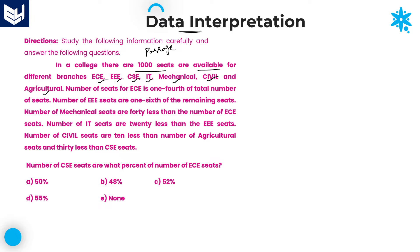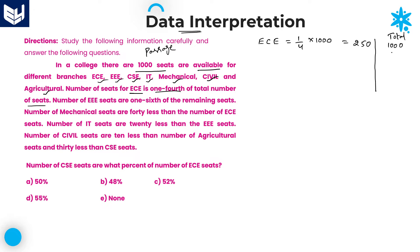Now in each and every branch, how many seats are available — that information is given as follows. Number of seats for ECE is one fourth of total number of seats, which is equal to one fourth of 1000, that value is 250. After accounting for ECE, you are left over with 750 seats.